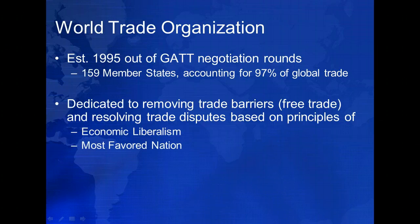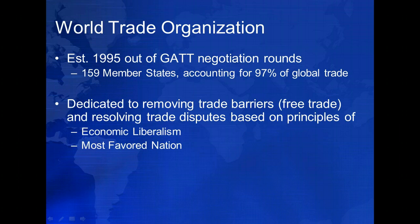Additionally, the WTO requires member states to abide by the principles of most favored nation and national treatment. Most favored nation means that all members of the WTO must offer their lowest tariff rates and highest import quotas to all other members. If the United States imposes a 2% tariff on German automobiles, for example, it could not impose a 20% tariff on Japanese automobiles, because both are members of the WTO. Importantly, trade blocs like NAFTA and the European Union are exempted from the MFN requirement.